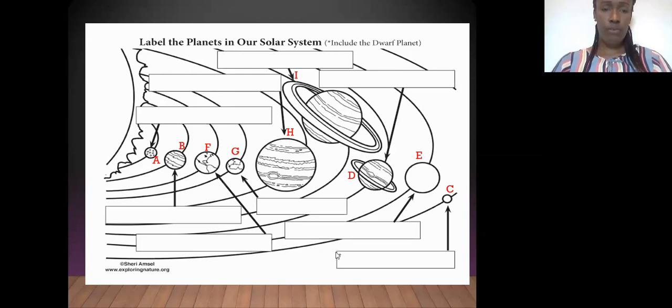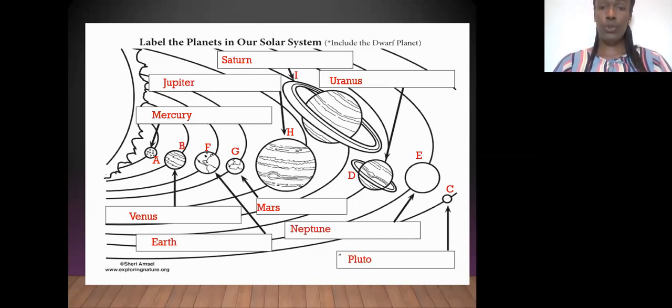Let's go over the answers. A is Mercury, B will be Venus, F will be Earth, G will be Mars, H will be Jupiter, I will be Saturn, D will be Uranus, E will be Neptune, and the last one will be Pluto. Put your total on the side of your paper, tally up your scores.